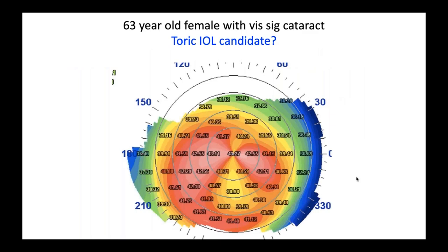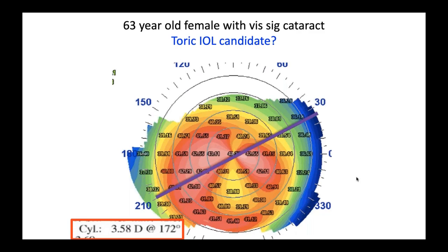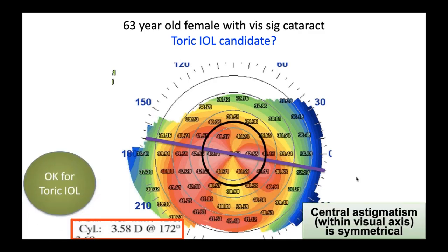Here's a patient with more of a pellucid pattern. Can this patient have a toric lens? In this case, I do feel very comfortable — the patient has 3.58 diopters of astigmatism at axis 172, and looking centrally in the very middle the astigmatism is quite regular. I did actually place a toric lens in this patient, and the patient did quite well.